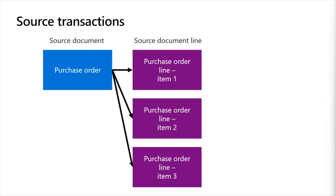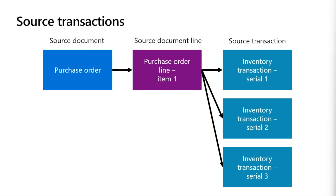Source document lines are related to one or more inventory transactions, also called source transactions. The system automatically creates one source transaction for each unique combination of inventory dimensions on the source document line. For example, we get three source transactions for a purchase order line if we receive three serial numbers. Often there is a one-to-one relationship between source document lines and source transactions where a product is shipped or received in a single warehouse with no tracking dimensions. Updates to source document lines can also cause additional source transactions to be created.